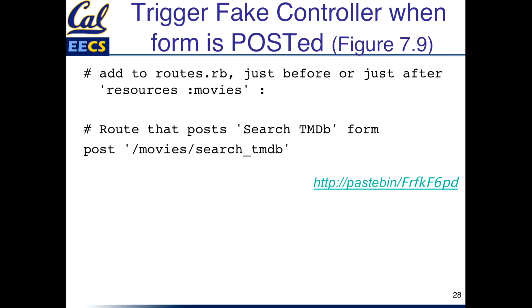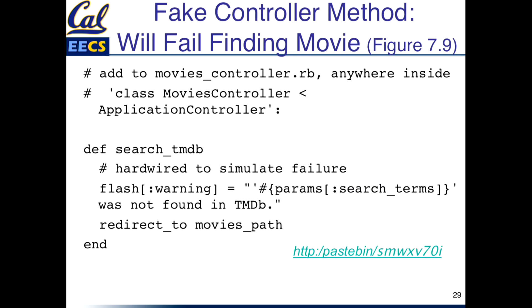Here is the route we need to make the connection — we're going to add this to routes.rb. And here's our dummy method. We're going to use the flash as a warning rather than a notice, and it's going to give the error message. That's the method we're going to use.